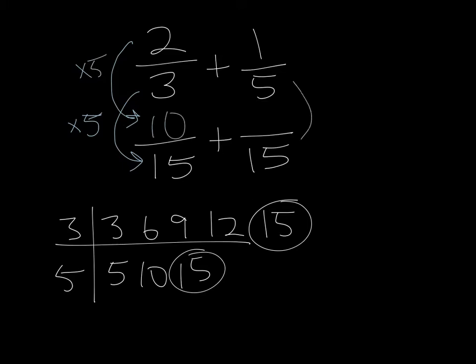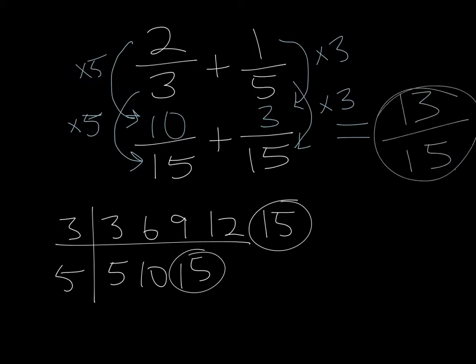Let's look at the other side. 5 to get to 15, we times it by 3. Which means the new numerator has to be times it by 3, which is 3. And we add them together and we know 10 plus 3 is 13 over 15. And that's our answer.